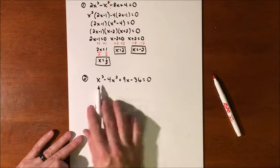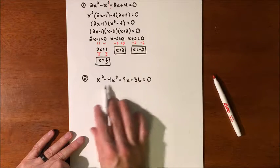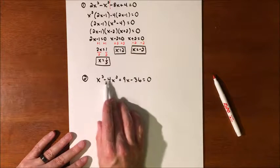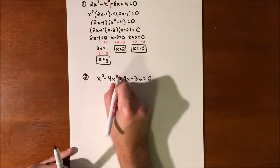Again, this one has potential to factor by grouping. We have four terms. Always try and get them in the highest exponent down. So put them in order. And we're going to see if we can factor by grouping.